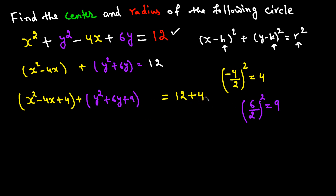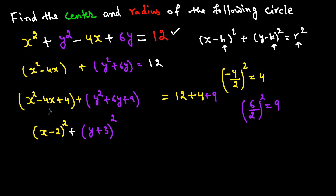Now each group is a perfect square. The X group becomes (X − 2)² and the Y group becomes (Y + 3)². On the right side: 12 plus 4 plus 9 equals 25, which is 5 squared. If you expand these squares back out, you recover the original equation.